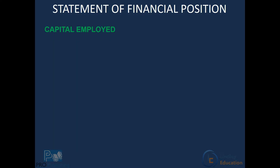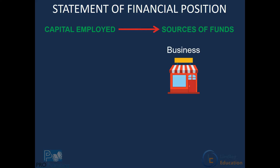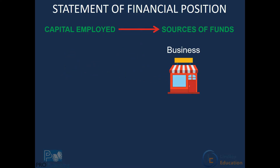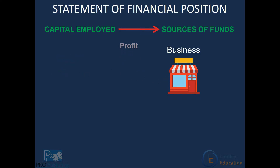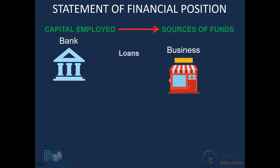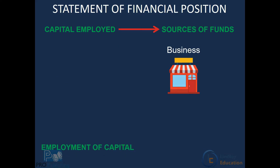Our first section is our capital employed section. In this section we will show the sources of funds — that's to say where the funds came from. Now a business can receive money in different ways. For instance, it can be either in the form of a capital contribution, or it can be in the form of a profit, or it can be in the form of a loan from the bank.